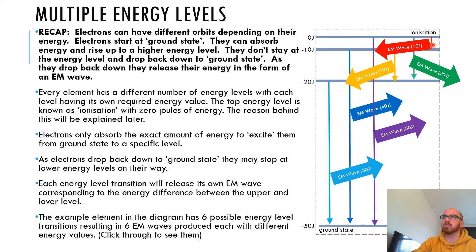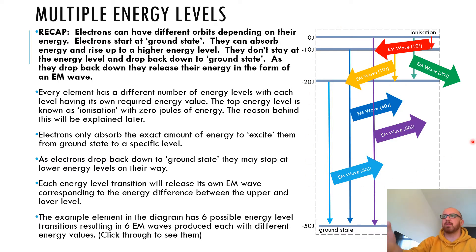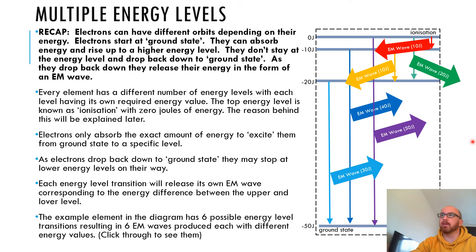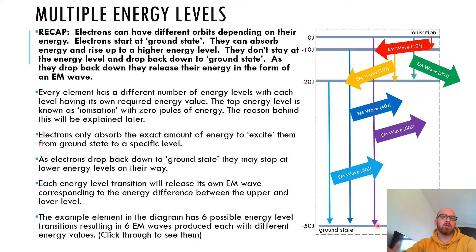There are six possible energy level downward transitions an electron can make inside this element. Now, assuming that every EM wave produced here was in the visible spectrum — visible light — the larger the energy level transition, the greater the energy, the higher the frequency, and the higher the frequency, the shorter the wavelength. So these colours actually correspond to what it might be like in an atom. The smaller energy jumps give out waves near the red end of the spectrum, and the larger energy jumps give out waves near the violet or blue end.